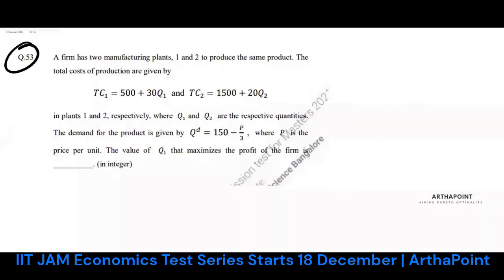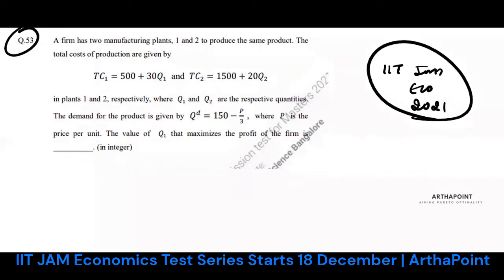This is question number 53 of IIT JAM Economics 2021 paper. Let's see what the question is saying. A firm has two manufacturing plants, 1 and 2, to produce the same product.